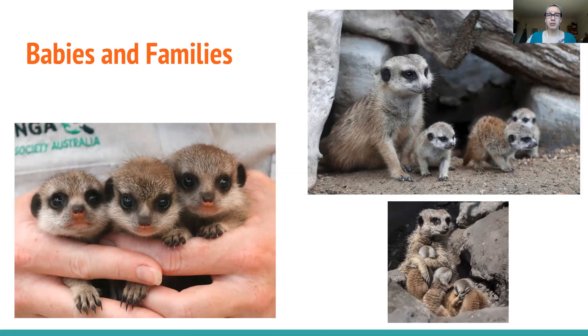Pups don't go off on their own until they're about a year and a half old. After that, they can live up to eight years in the wild in the desert, but in zoos — where they're safe from predators and receive medical care — they can live for up to 13 years.